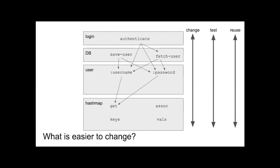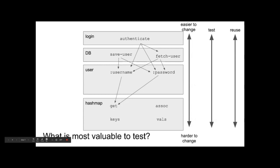Likewise for maintenance: what's easier to change — the top or the bottom? I would contend that stuff at the top is easier to change. There are fewer things that depend on it. Going all the way to the top — main is easiest to change; it won't have an effect on the rest of the code. Obviously it changes your software the most, but it has the least repercussions on other bits of code.